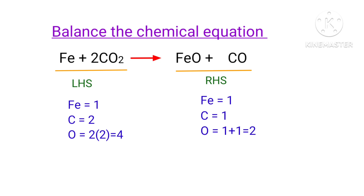The right-hand side has one ferrous atom, one carbon atom, and two oxygen atoms present. The number of atoms are not balanced on both sides. To balance the chemical equation, we need to make use of coefficients.